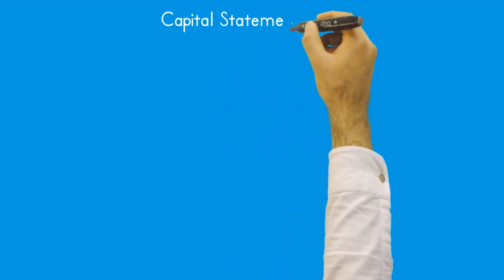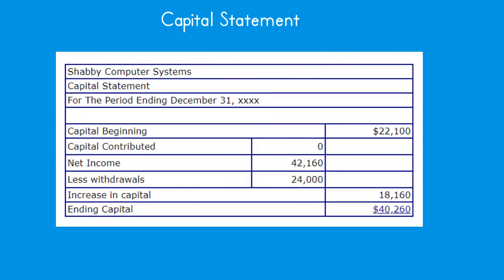The capital statement serves as the bridge between the income statement and balance sheet. It uses the net income or loss from the income statement, plus owner's investments and withdrawals, to determine the owner's ending capital balance shown on the balance sheet. Revenues increase equity; capital contributed increases equity; expenses decrease equity; and owner's draws decrease equity. The major sections of the capital statement are: heading, beginning capital, capital contributed, net income or loss, withdrawals, calculation of increase/decrease to capital, and resulting ending capital balance. The heading contains the company name, title, and period covered.